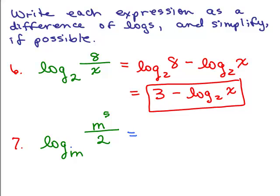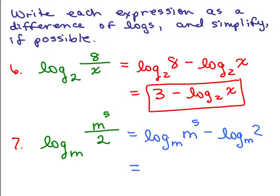For the next one, the base is m. Using the quotient rule: log base m of m to the fifth minus log base m of 2. What is the log base m of m to the fifth? That's 5 — you're asking m to what power equals m to the fifth, which is just 5. So it's 5 minus log base m of t, and in this one we can't simplify further.